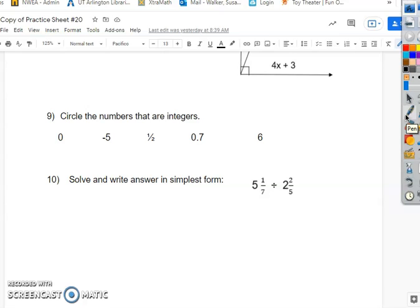Now, solve and write the answer in simplest form. So this is division. So hopefully you remember division. We do not get an LCD. We do Texas. So 7 times 5, 35 plus 1, 36 over 7.